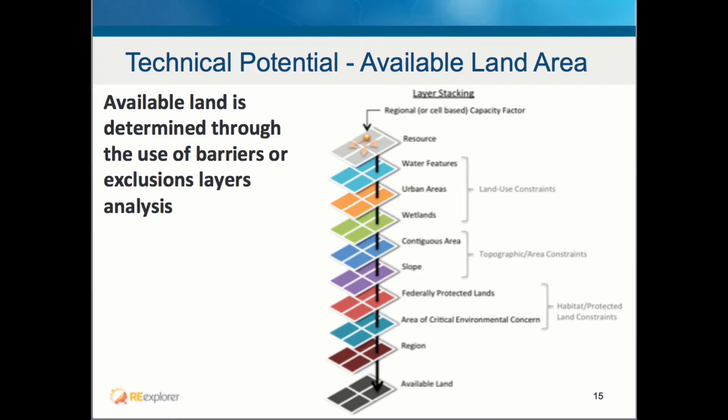To determine the technical potential for a particular resource, you need to consider areas that are available for development. Data sets that can help reveal these locations include water features, urban areas, wetlands, slope, federal lands, and others. Once you have combined all available data sets, you end up with a single data set showing available land area.